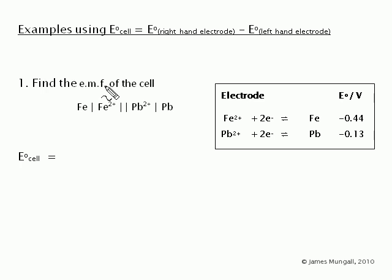This question says find the EMF of this cell which has Fe/Fe2+ as the left hand half cell and Pb2+/Pb as the right hand half cell. The data you've been given are the electrode potentials for those two things.